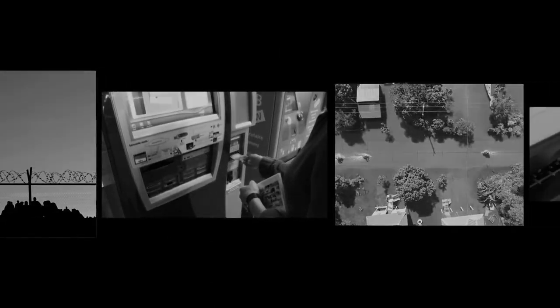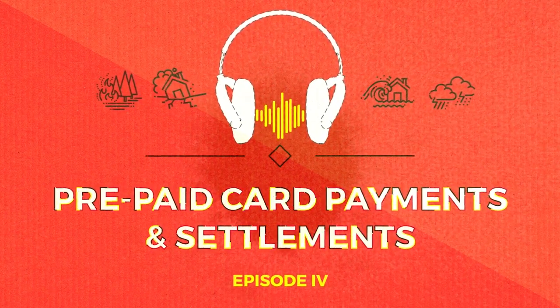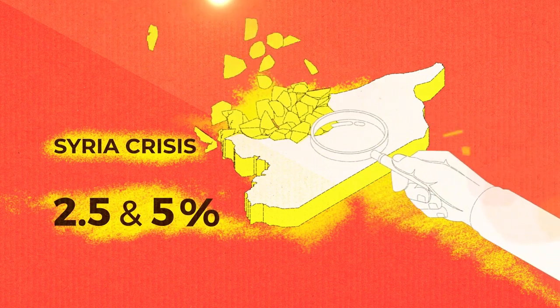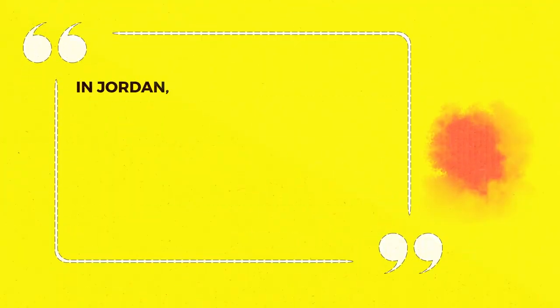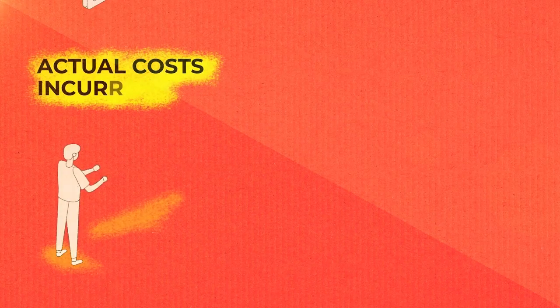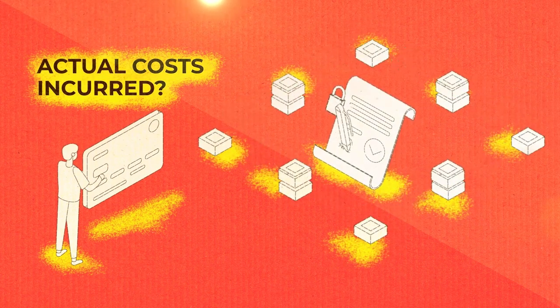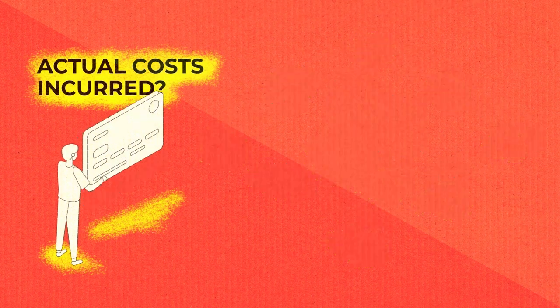Today we'll be taking a look at prepaid card payments and settlements. As always, let's start with a short reality check. At the beginning of the Syria crisis, relief agencies in Jordan and Lebanon paid between 2.5 and 5% of the total sum transmitted in transaction fees for their card-based cash and voucher assistance programs. By 2017, collective negotiation had reduced this figure to 1.67%. But while recognizing that the cost of cards are typically higher than cash for small retail transactions, what does this 1.67% represent and how much of it covers the actual costs incurred?